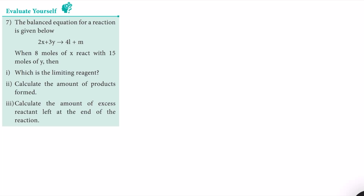The balanced equation for a reaction is given: 2X + 3Y → 4L + M. When 8 moles of X react with 15 moles of Y, what is the limiting reagent? We also need to find the amount of products formed and the amount of excess reactant left at the end of the reaction. X is 8 moles and Y is 15 moles.